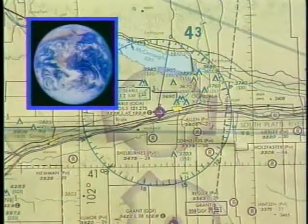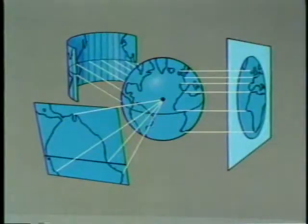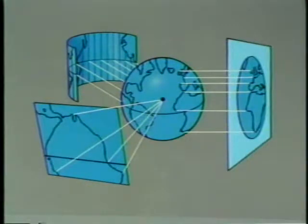There are many problems associated with trying to portray a spherical object such as the earth in chart form. When we try to flatten any spherical object, distortions occur. Over the years, several charting techniques called projections have been developed to minimize these distortions and inaccuracies.